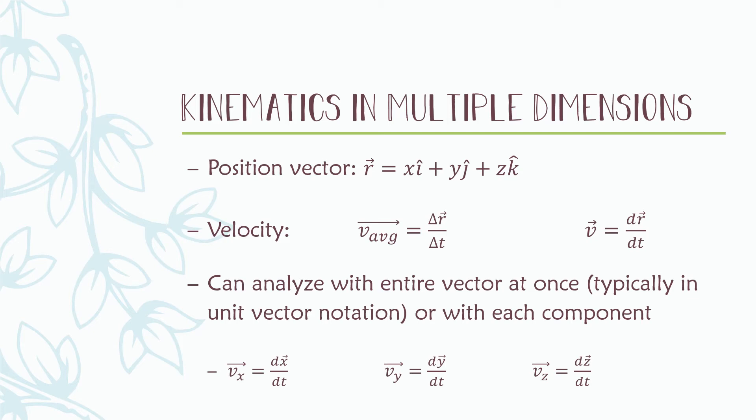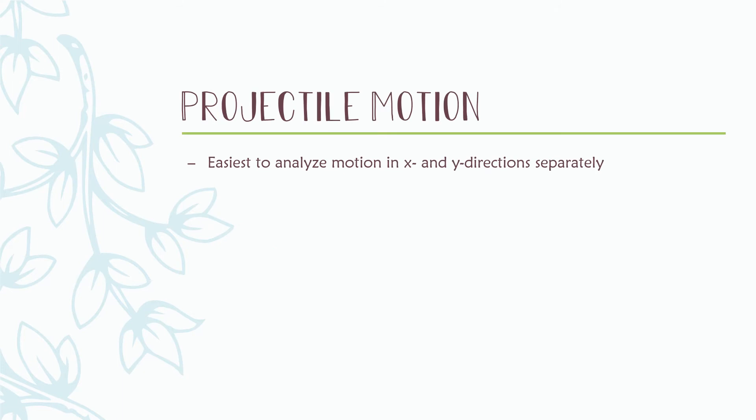A special scenario of applying kinematics in multiple directions is something called projectile motion. A projectile is an object that has a velocity in both the x and y directions, and it's easiest to analyze the motion of this object treating the x and y directions separately.